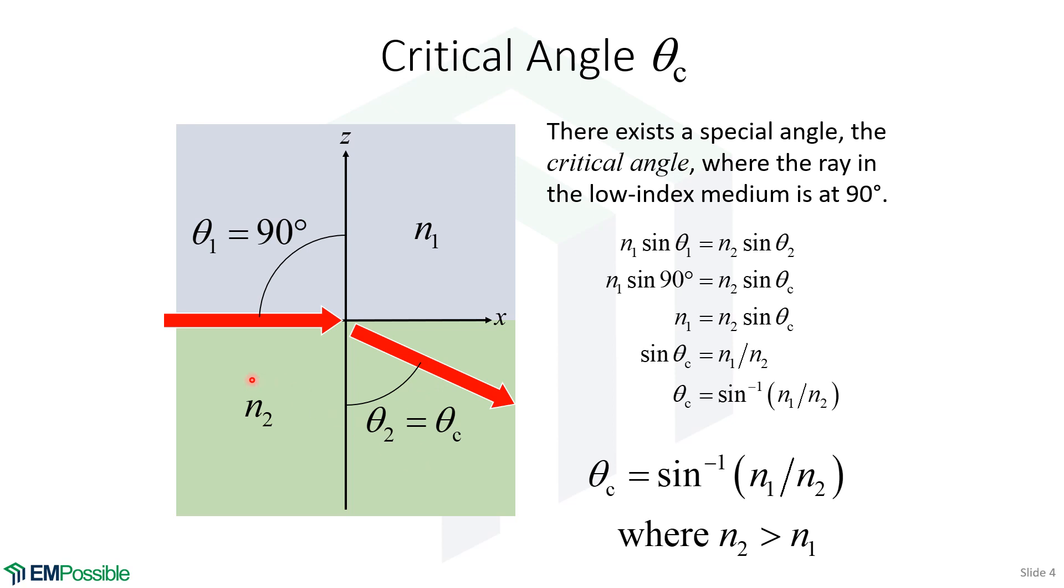Looking at what's inside this inverse sine, we conclude that we can only have a critical angle if the refractive index n2 is greater than n1. If n1 is the greater refractive index, we would have a critical angle on the first side, not the second side of the interface.